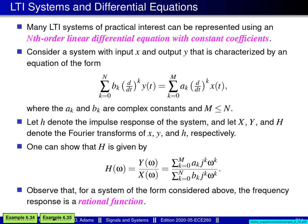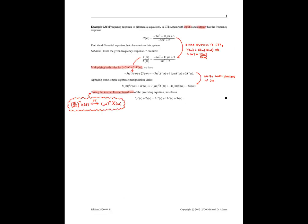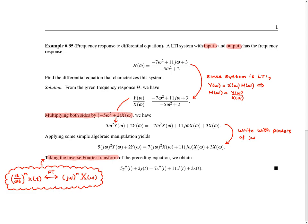The next example is example 6.35. We're given an LTI system with input little x, output little y, and frequency response big H given by a particular formula, and we're asked to find the differential equation that characterizes this system. Because the system is LTI, it satisfies big Y equals big X times big H, which rearranges to big H equals big Y over big X. We substitute this into the given formula for big H, replacing big H with big Y over big X.